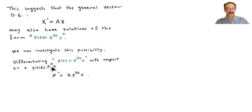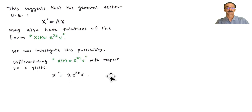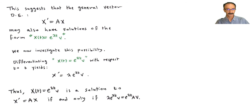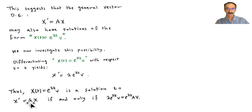Here's x, assuming it takes the form e^(λt)v. Finding the derivative gives x' — lambda comes down in front, giving λe^(λt)v. Thus x(t) = e^(λt)v is a solution to x' = Ax if and only if the following condition holds.